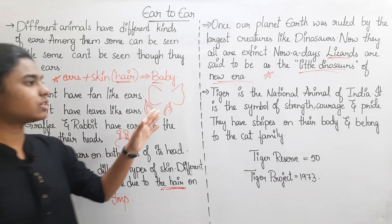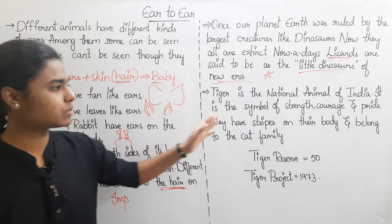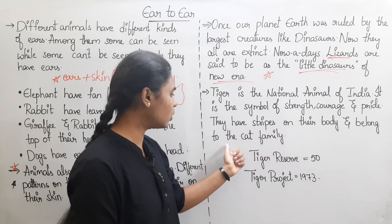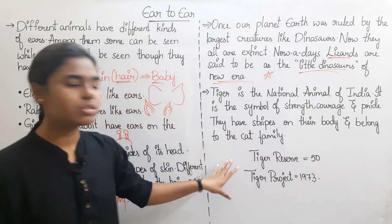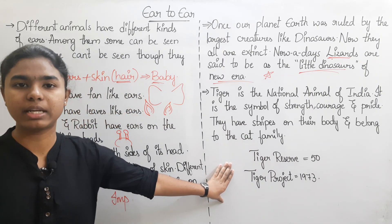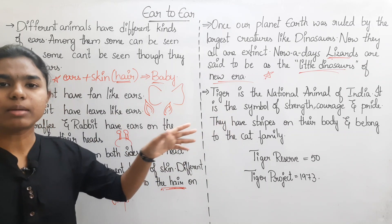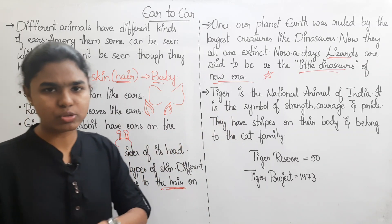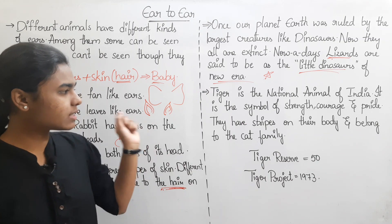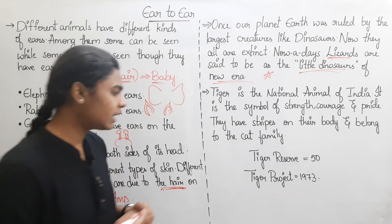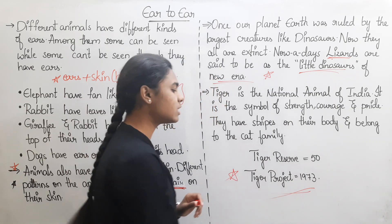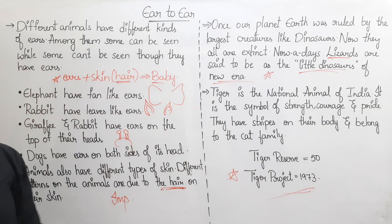Tiger is the national animal of India. It is a symbol of strength, courage, and pride. They have stripes on their body and belong to the cat family. Our country's national animal is the tiger. The tiger has stripes — these are different patterns. One extra point: Project Tiger was launched in the year 1973.